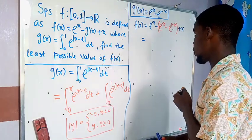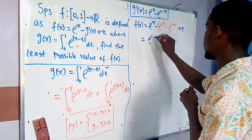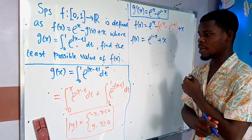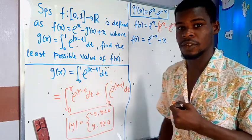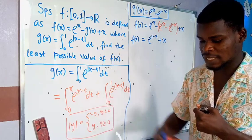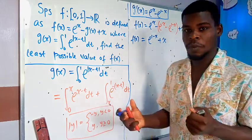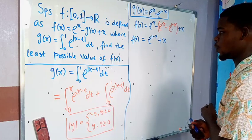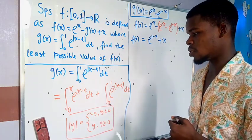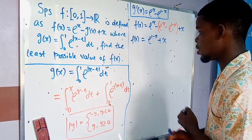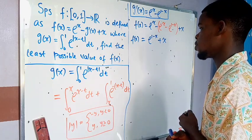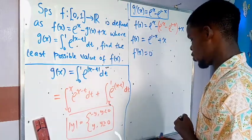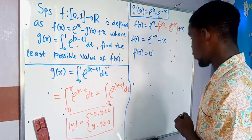To determine the least possible value of f(x) — essentially the minimum value — we differentiate f(x) and set it equal to 0 to find the stationary point. Differentiating f(x) equals e to the power of (1 minus x) plus x with respect to x gives negative e to the power of (1 minus x) plus 1 equals 0.